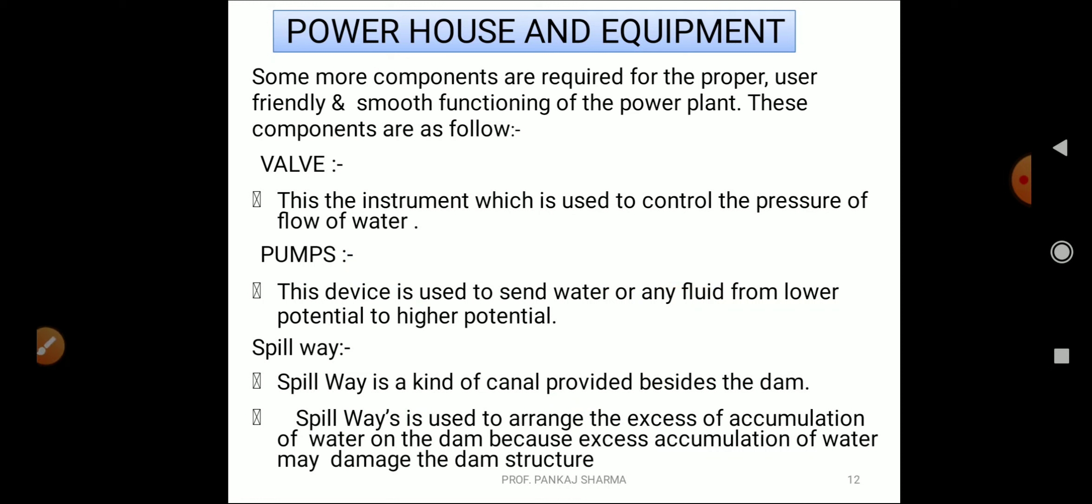Power house and equipment. Some more components are required for proper and user-friendly and smooth functioning of the power plant. These are valve - the instrument which is used to control the pressure or flow of water. Pumps - this device is used to send water or any fluid from lower potential to higher potential.